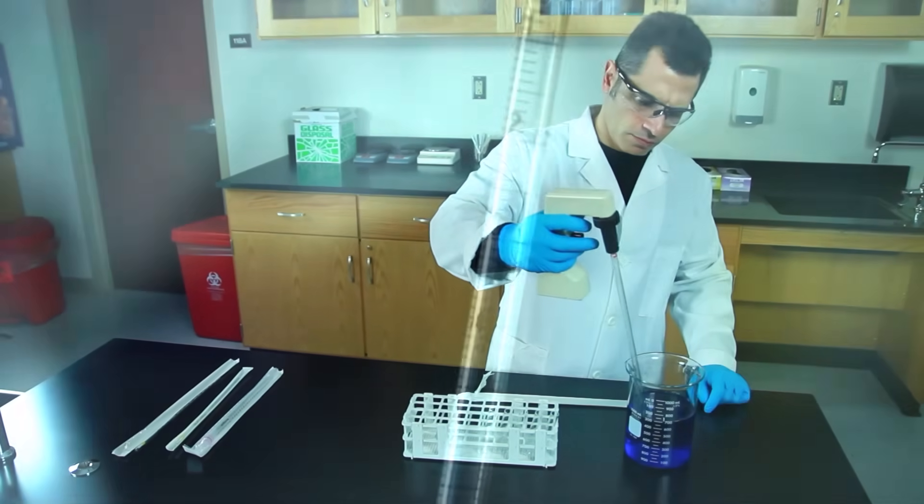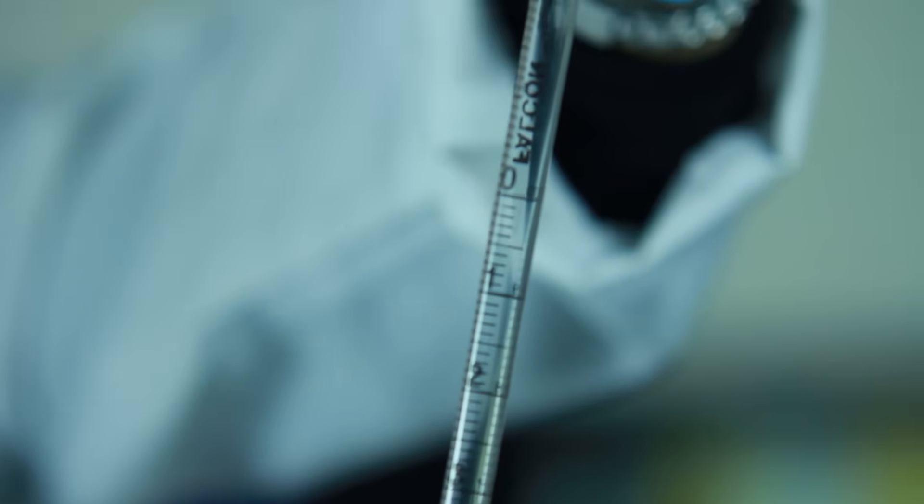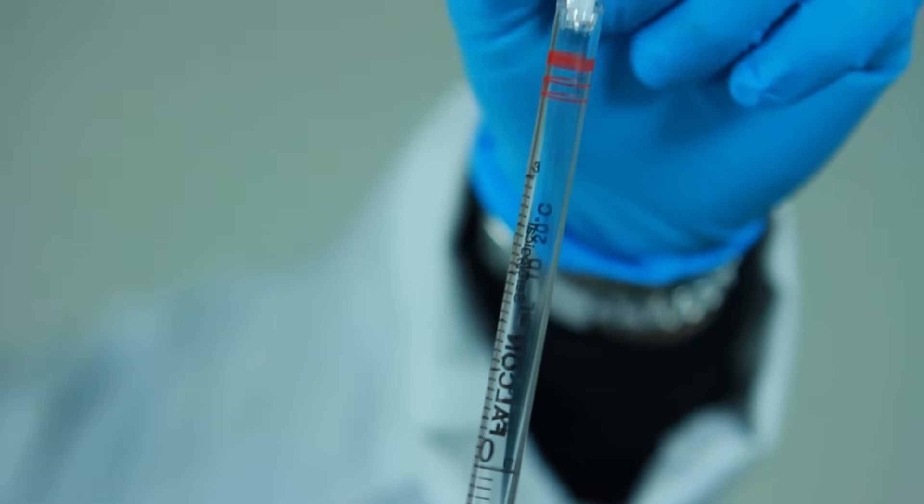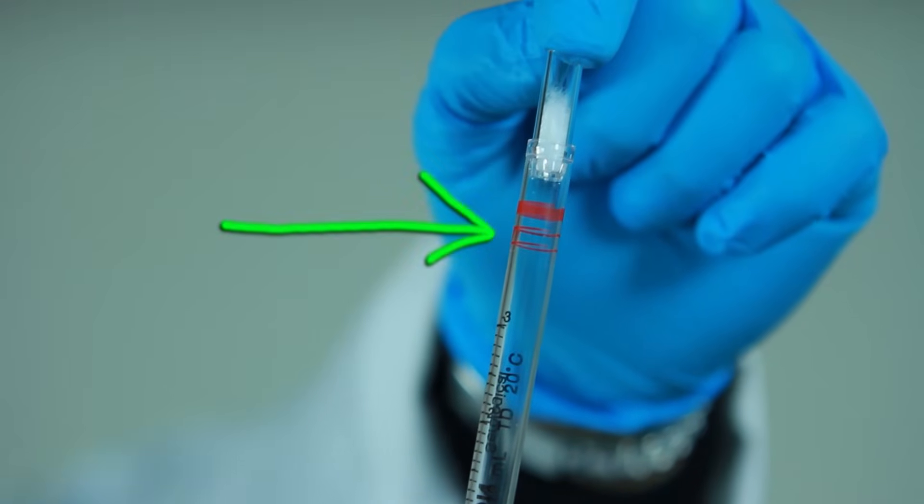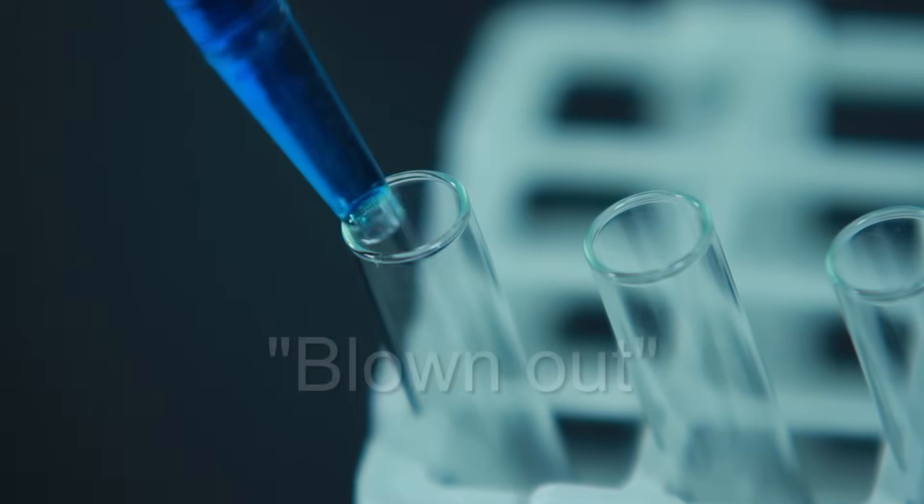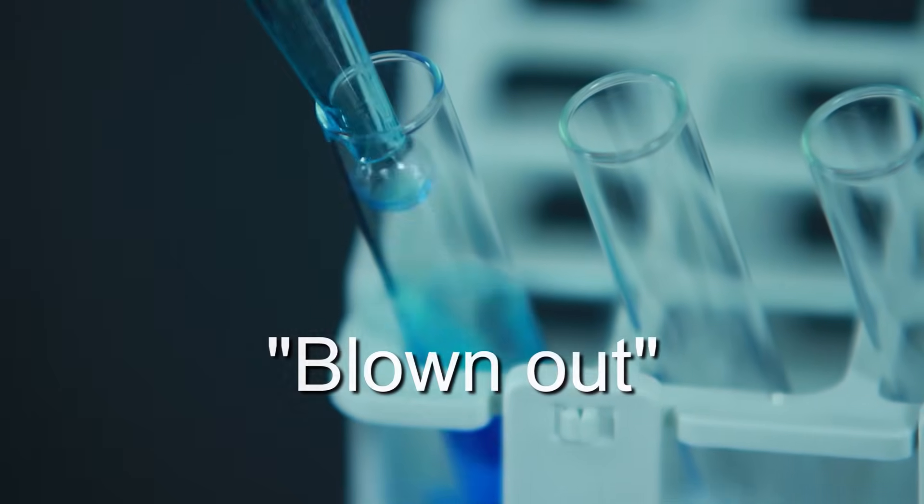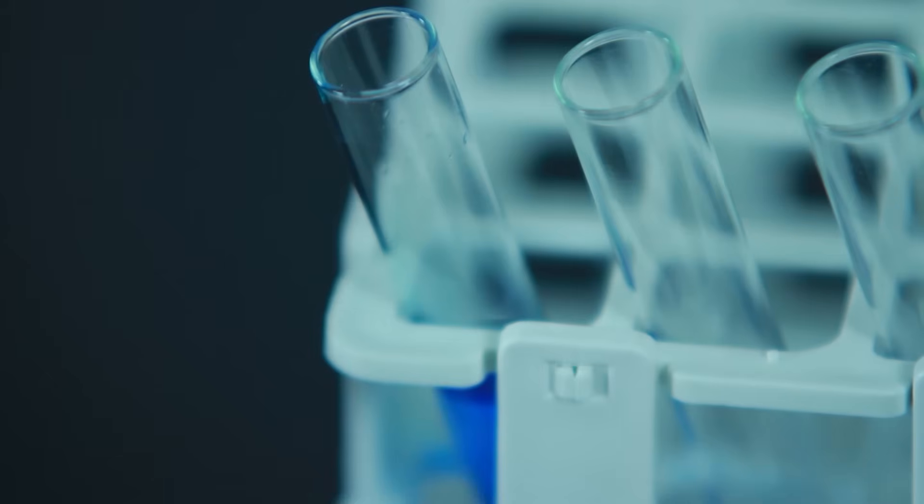Let's take a closer look at a 10 milliliter serological pipette. Notice the two rings at the top. These markings indicate that the pipette is to be blown out. That means the pipette must be completely emptied in order to deliver the measured volume.